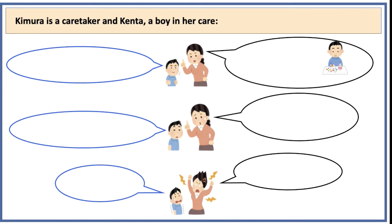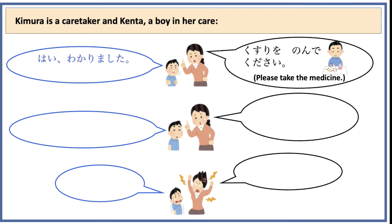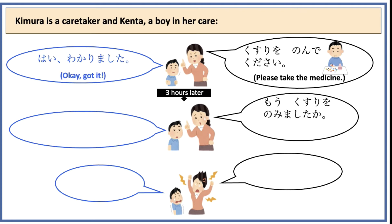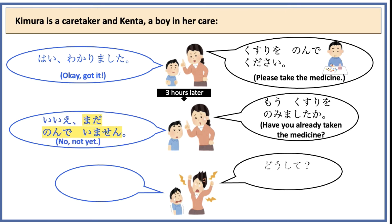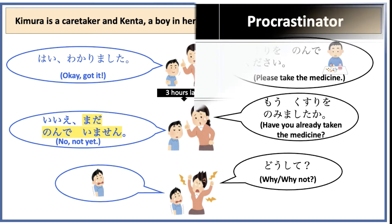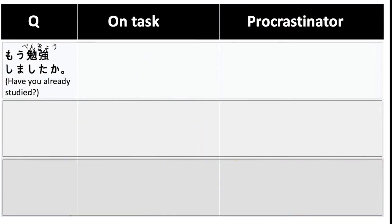Now, let's listen to this dialogue between Kimura, a caretaker, and Kenta. You can probably tell from this conversation that Kenta is a procrastinator. In this table, we will compare the answers of people who are on task versus procrastinators.